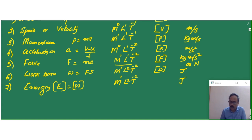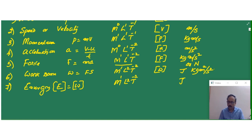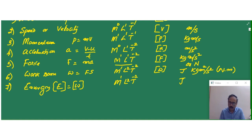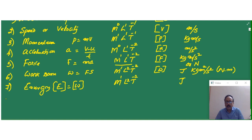Therefore energy and work done will have the same dimensional formula: M L2 T-2. The SI unit is Joules, or kg meter square per second square, or Newton meter. When we say energy, all forms of energy will have the same dimensional formula — it may be potential energy, kinetic energy, heat energy, or any form of energy.